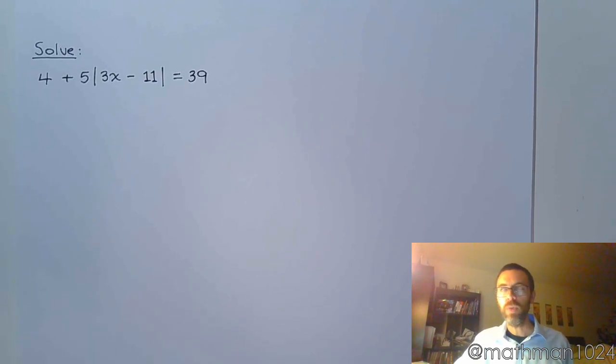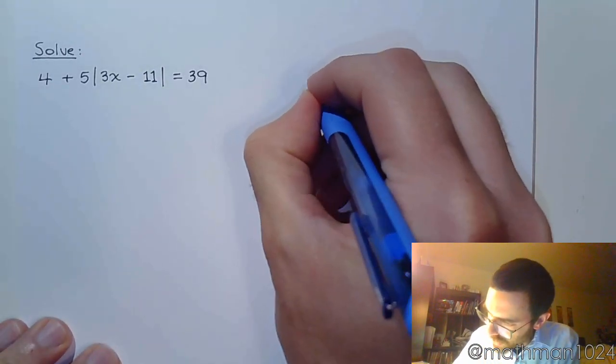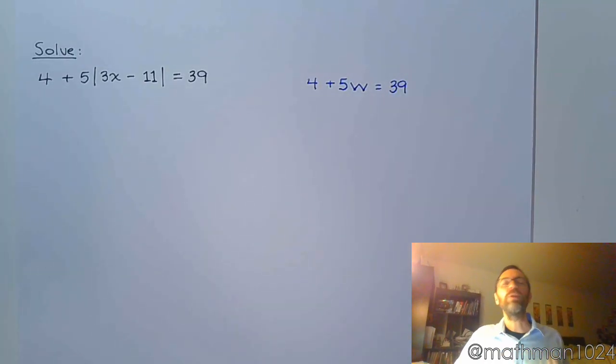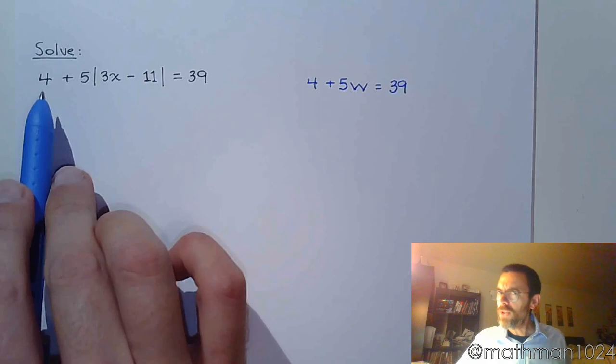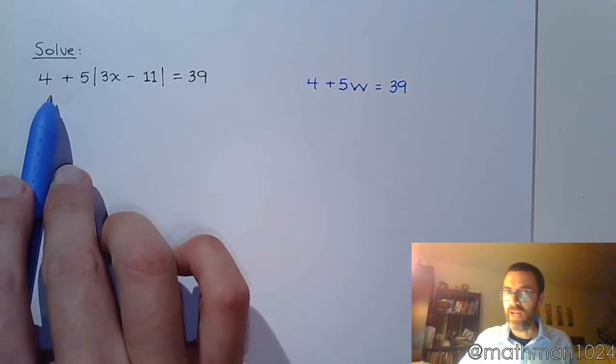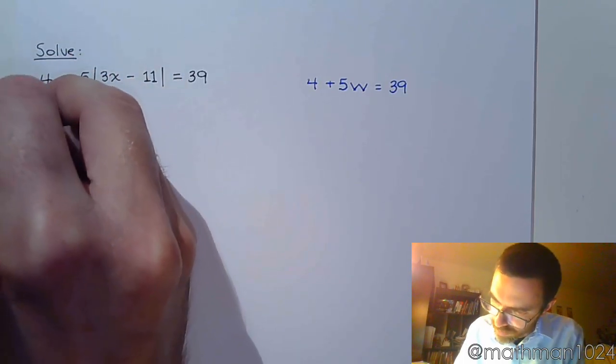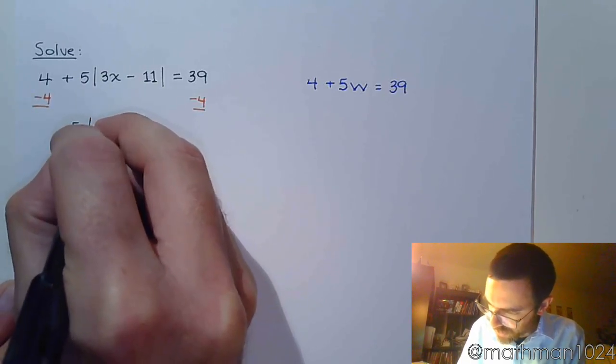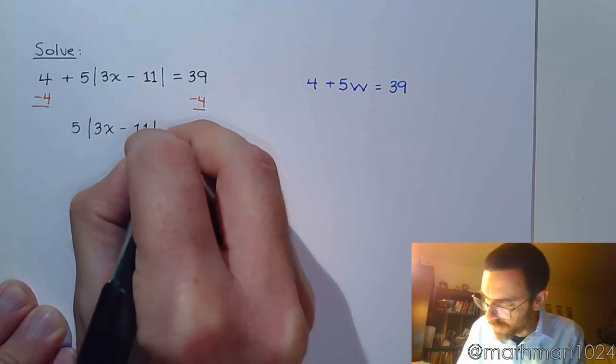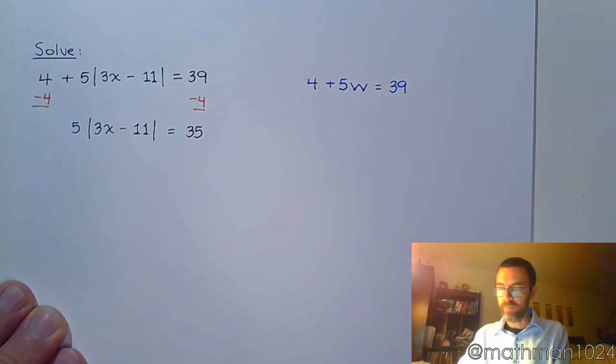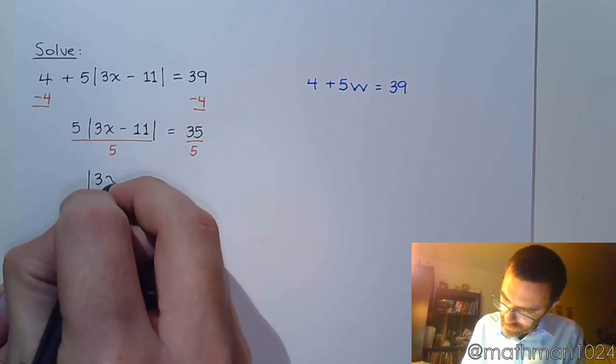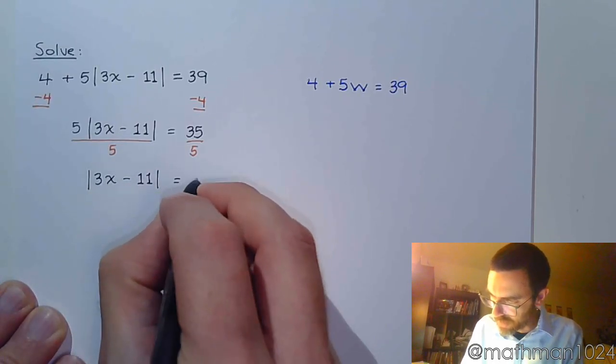If you have a hard time seeing what we were supposed to do, pretend that the absolute value isn't there. If I gave you this and I said solve 4 plus 5w equals 39 and I said get w by itself, I don't think anybody here would have a question about subtracting 4 and dividing by 5. That's the same thing that's going on here. Unfortunately, some students think that you can add 4 and 5. If you can't add the 4 and 5 here, you're not adding it here. So first things first, move the 4 to the other side. So subtract 4. So 5 times the quantity 3x minus 11 in absolute value is equal to 35. Now we divide both sides by that coefficient. So the absolute value of 3x minus 11 equals 7.